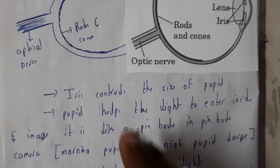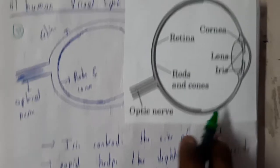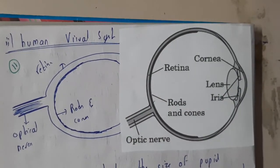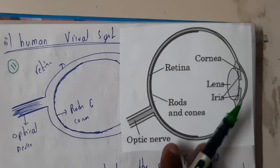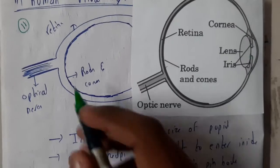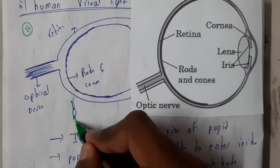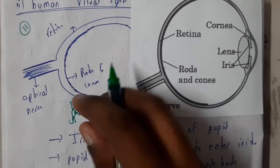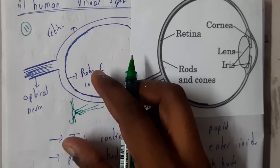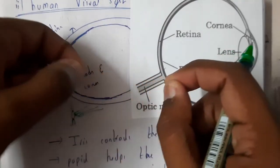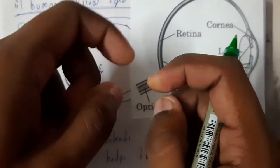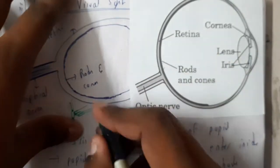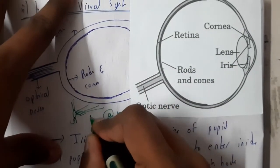The iris controls the size of the pupil. The main use of the pupil is that it controls the entry of light. If the pupil size is really large, that means the iris is enlarging the pupil size, so there is a chance of high entry of light. Whereas if the pupil size is very small, there is a chance of very low entry of light.